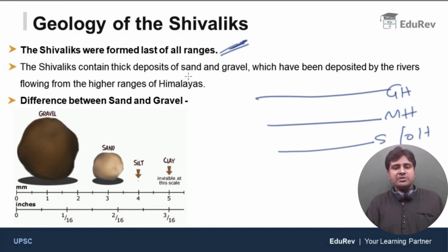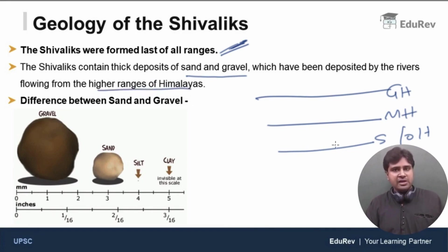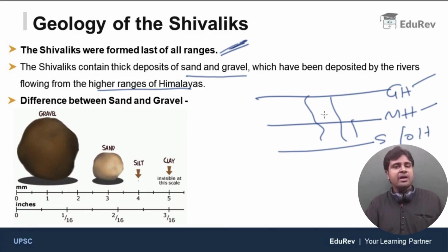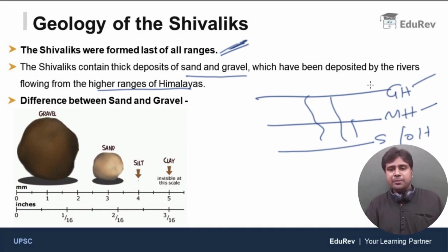Shivaliks contain thick deposits of sand and gravel, which have been deposited by the rivers flowing from the higher ranges of the Himalayas. Shivaliks formed last; by that time, the Great Himalayas and Middle Himalayas were already formed and rivers had started flowing from those mountains. The Himalayan rivers carried sediments — particles of sand and gravel — which were deposited on the Shivaliks. Compared to the Shivaliks, the Middle Himalayas and Greater Himalayas are higher ranges.